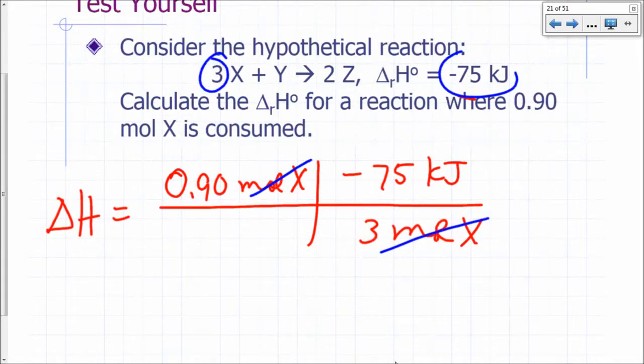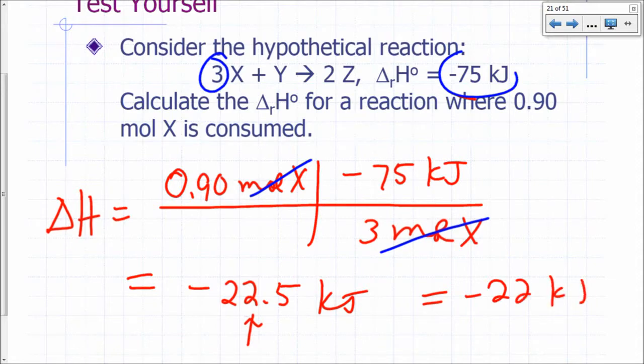So our delta H in this case is how much? Negative 22.5 kilojoules. And two sig figs, so negative 23 or negative 22 kilojoules.